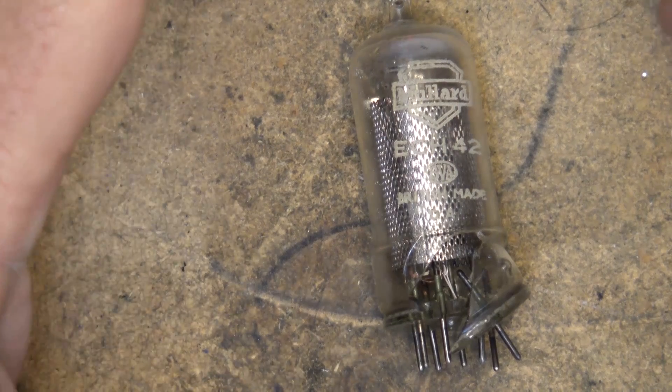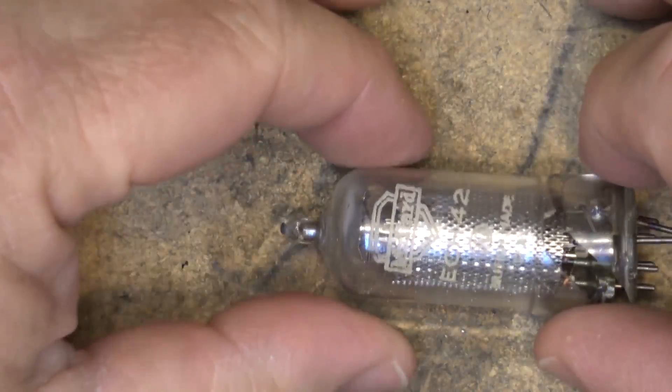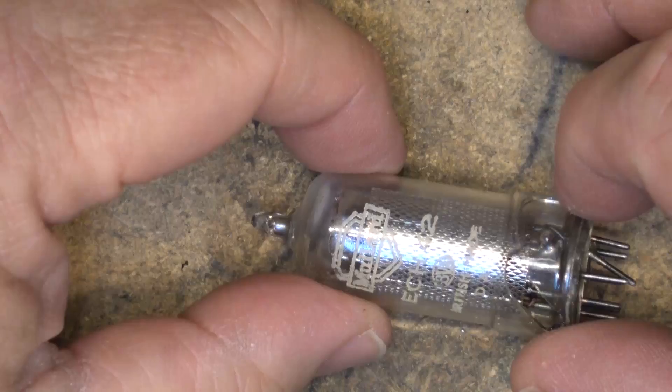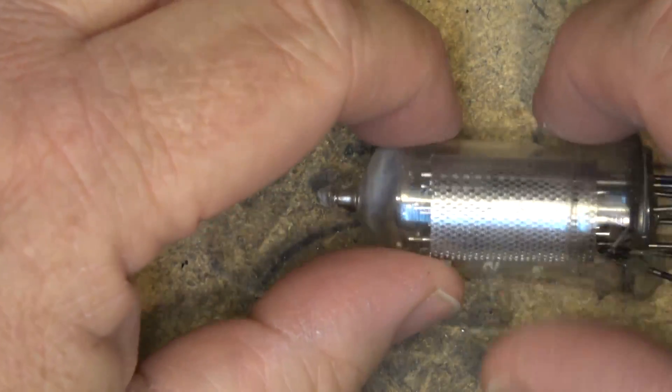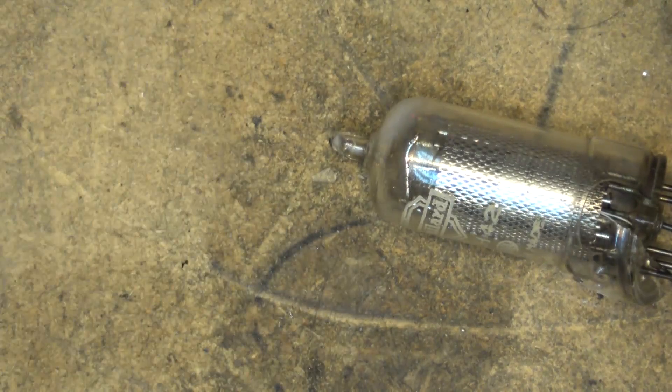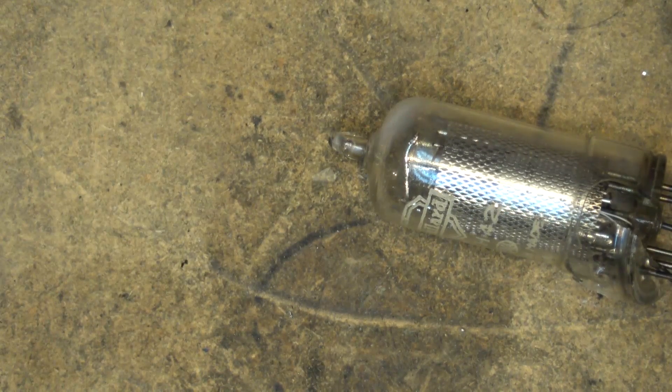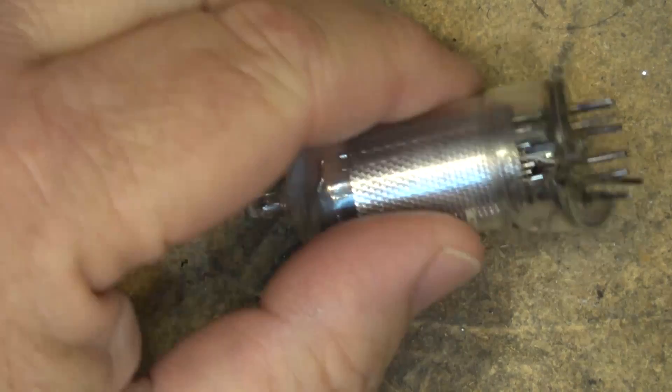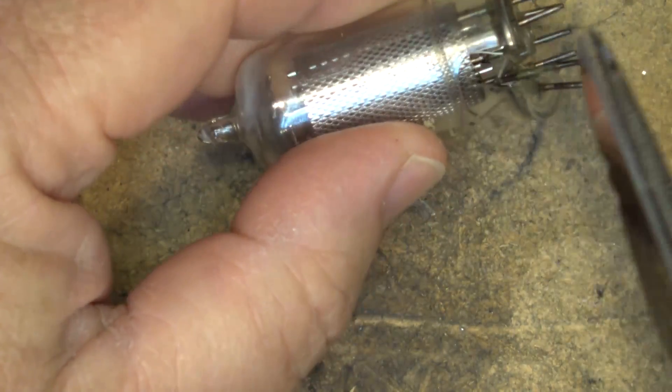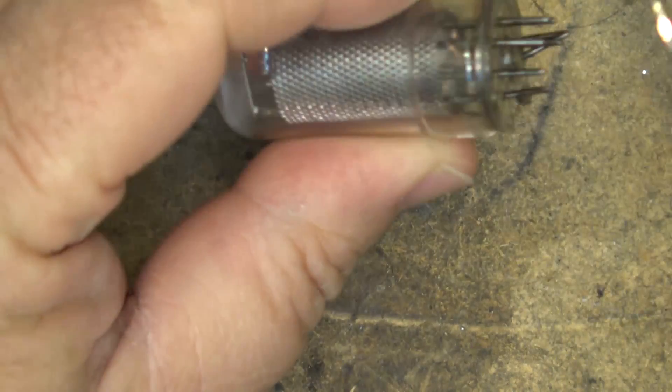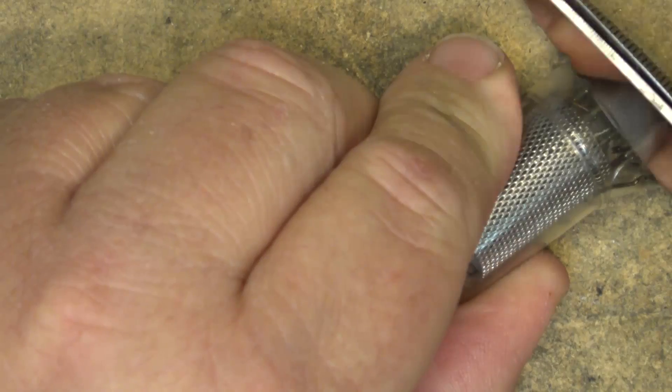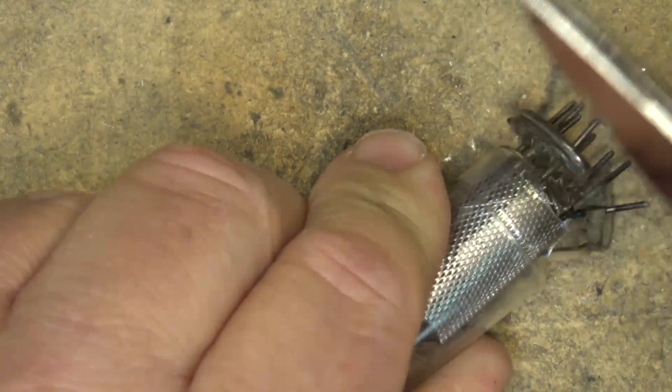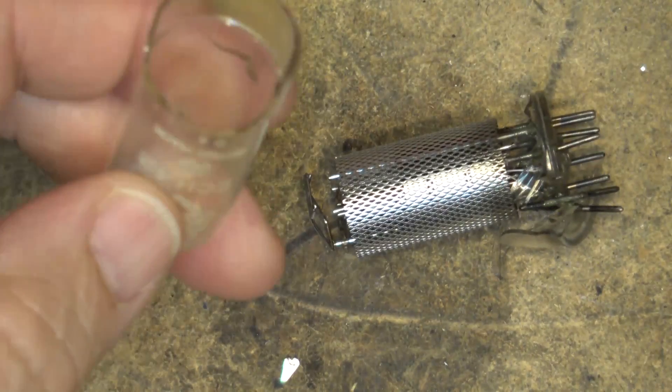So this is the ECH-42 tube that came out of my Pi radio, and I thought it might be kind of neat to look at what's inside this thing, see the makeup of one of these tubes. I was going to get Big Clive's X-ray machine, but I thought that might be a little bit of overkill. So I think my old snips here will probably be more than adequate to remove the base from this tube. There we go. That's got the base off.